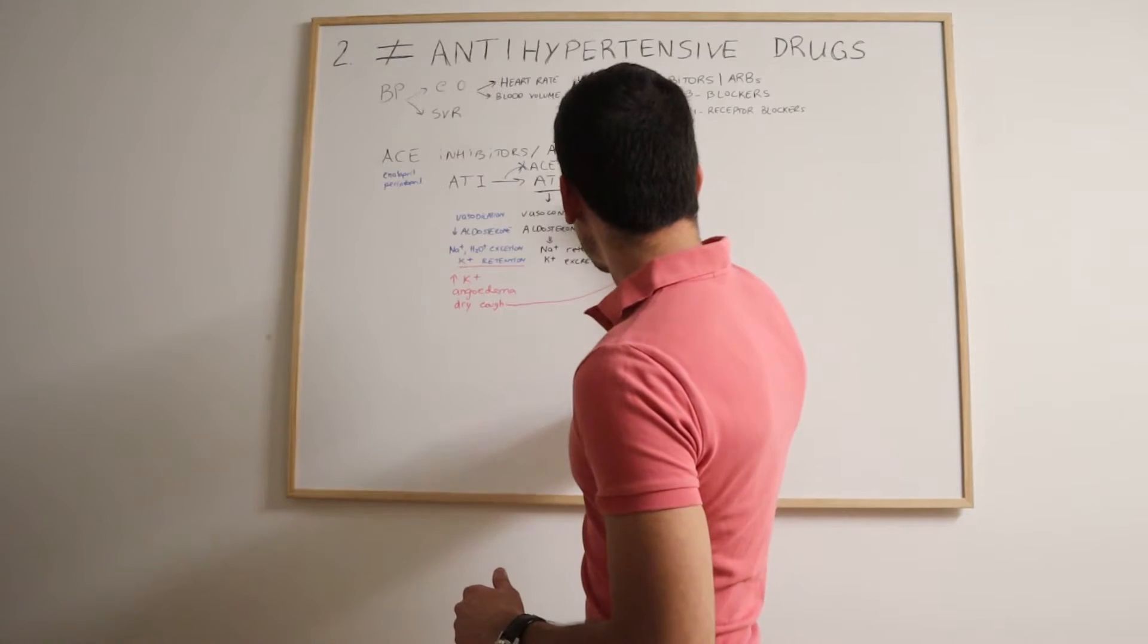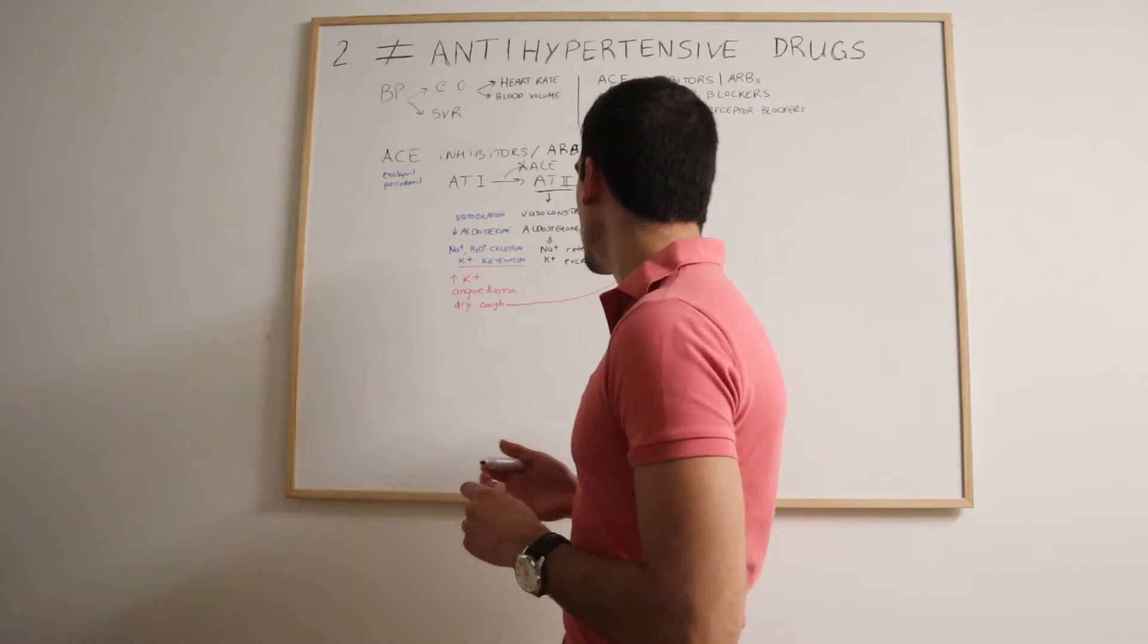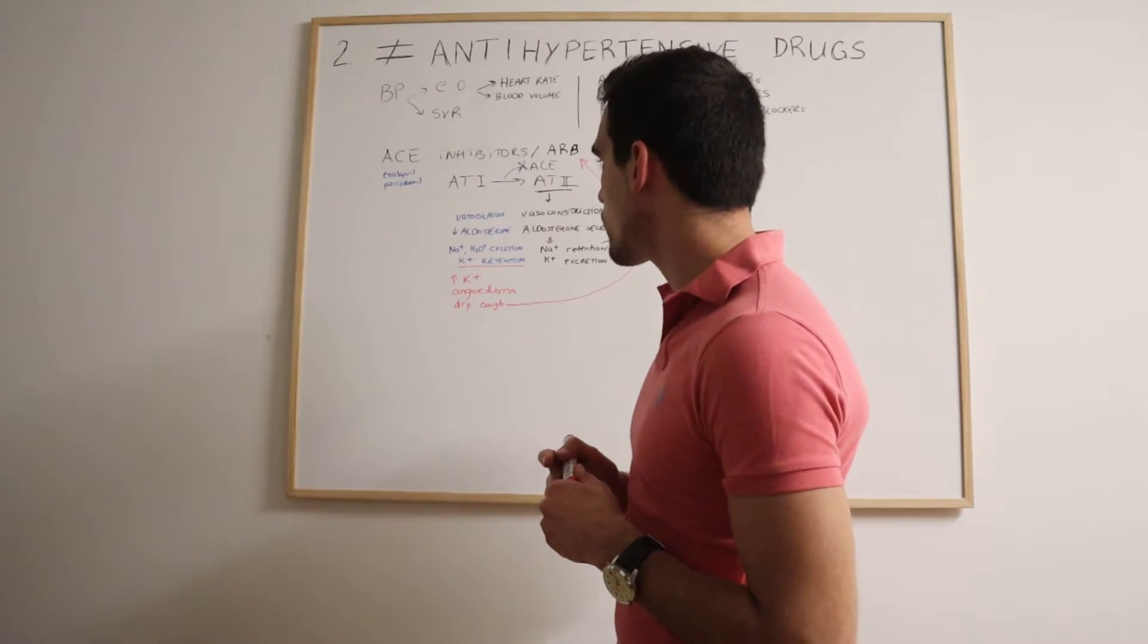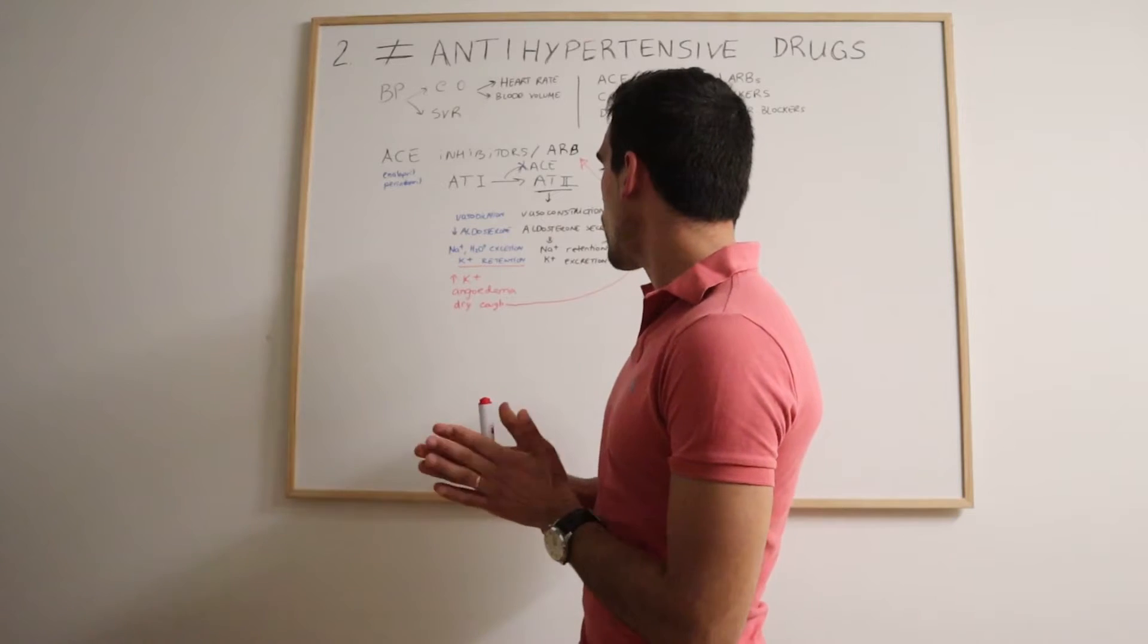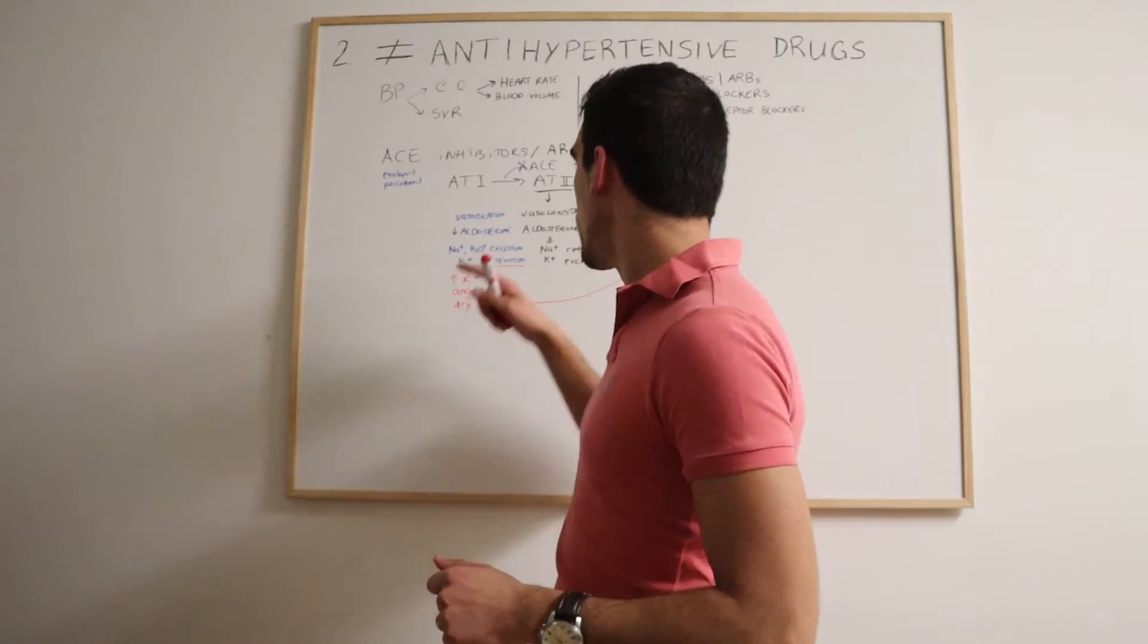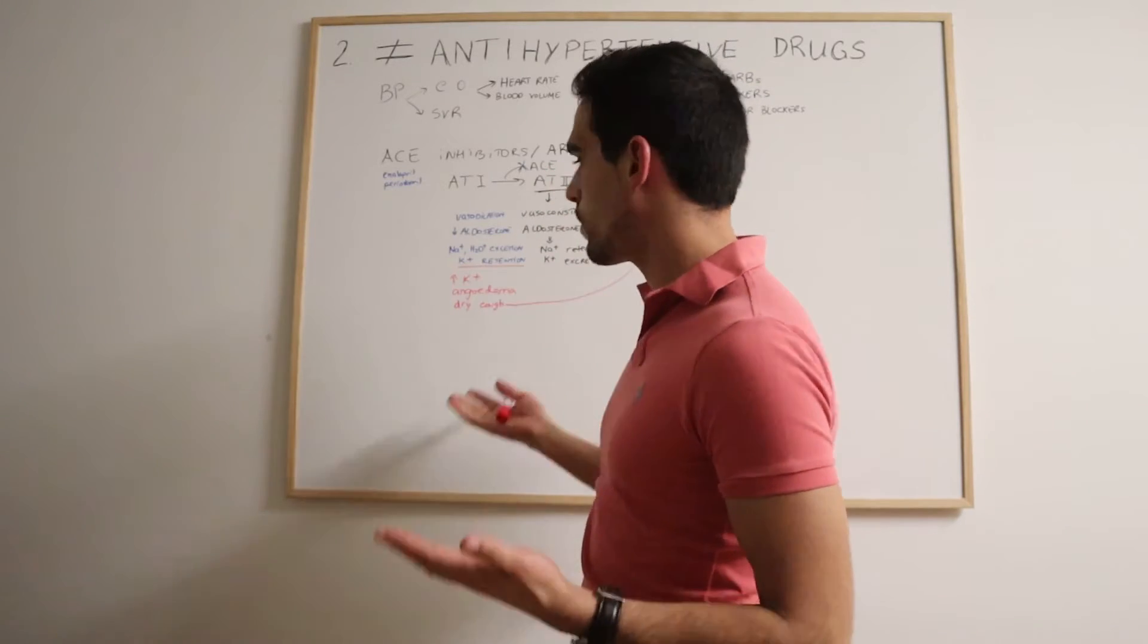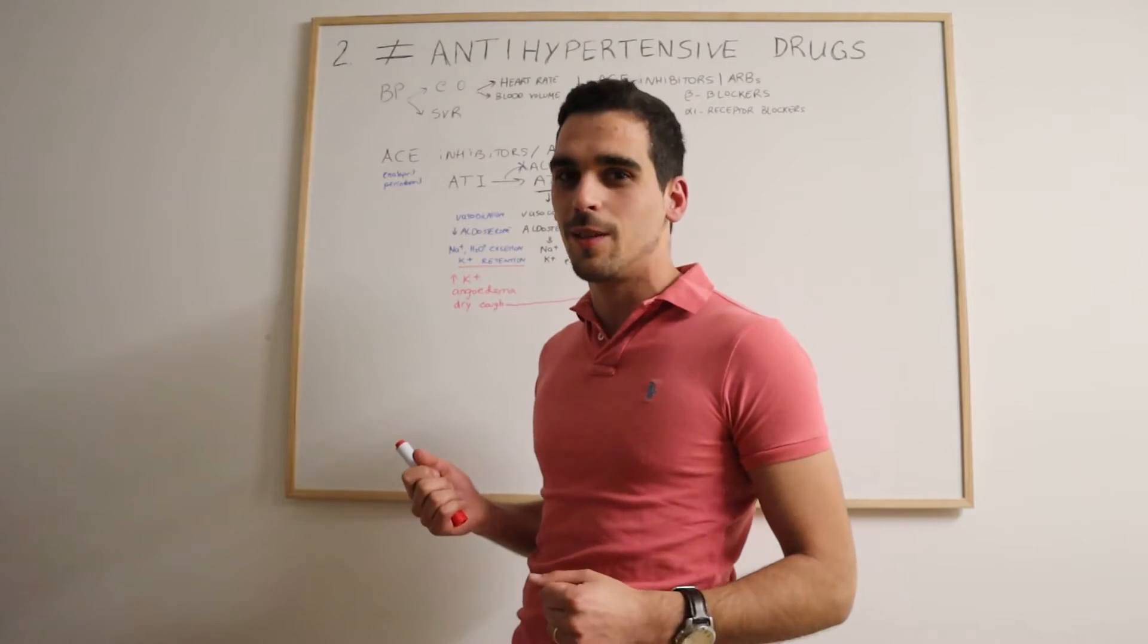then the doctor can switch it to ARBs, to angiotensin receptor blockers. That's, from my experience, the most common reason why patients are put on angiotensin receptor blockers, because they've experienced some dry persistent cough with ACE inhibitors.